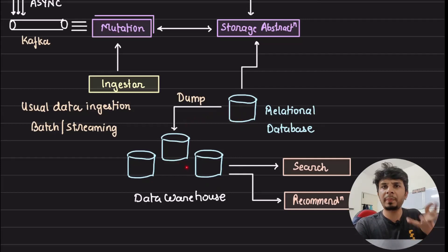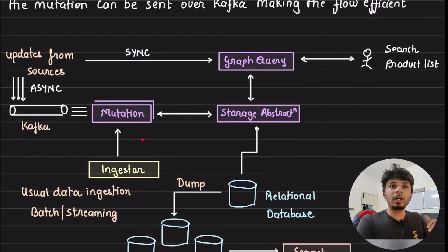This is what your normal flow would look like. Then periodically, your relational database is dumped into a data warehouse, maybe your Redshift, maybe S3, somewhere. Relational database periodically dumped onto your data warehouse so that it can be consumed by search or recommendation service for offline processing, right?